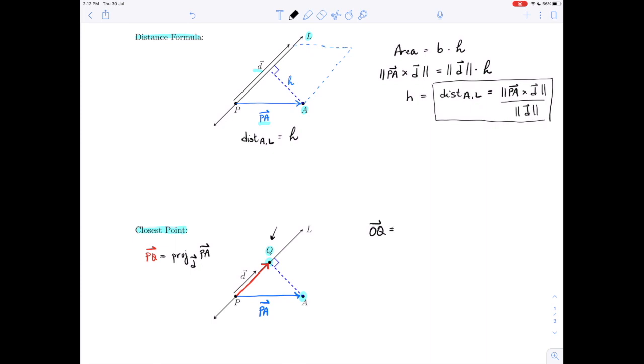which will have as its components the same coordinates as point Q, that is OP, the point that we can see on the line, plus PQ. And PQ, we just said, is the projection vector, so OP plus the projection of PA onto d.